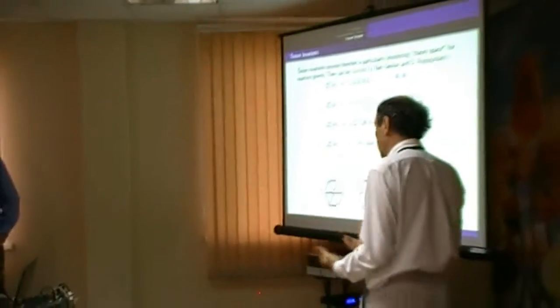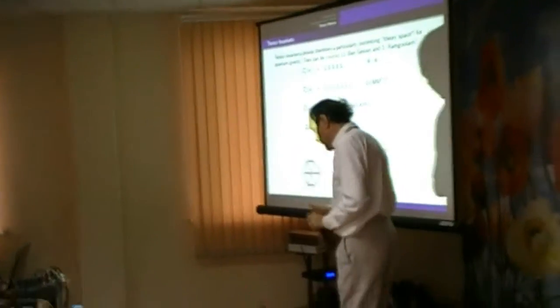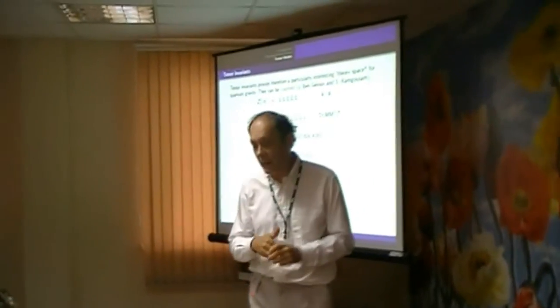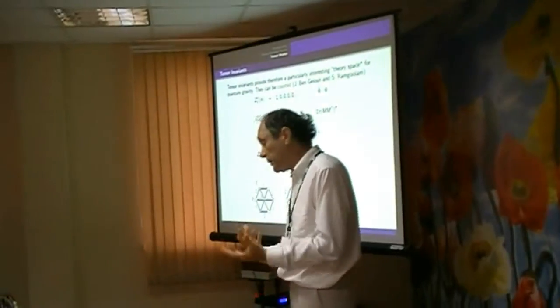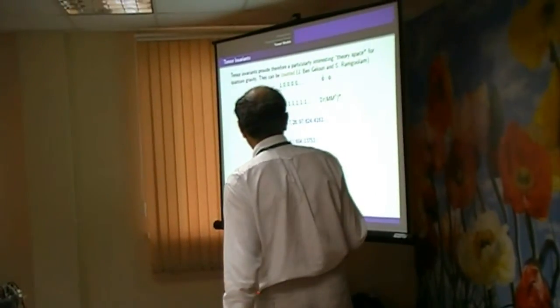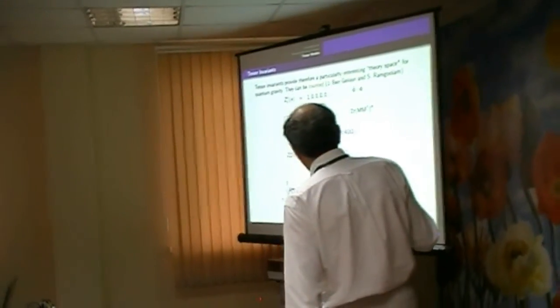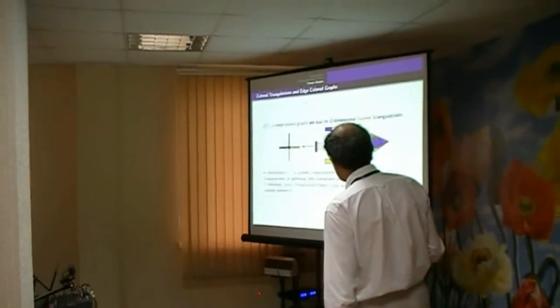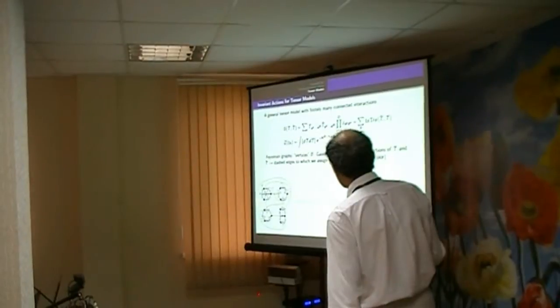Thank you for the very nice talk. I have a question: is it true that in D dimensions of spacetime you consider a tensor of rank D? Yes, a priori. The most natural thing to quantize a theory in dimension 3 is to try tensors of rank 3, and in dimension 4, tensors of rank 4, because these gluings are naturally associated to gluings of tetrahedra.